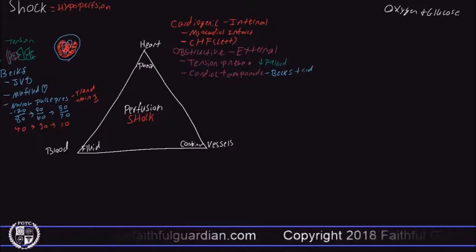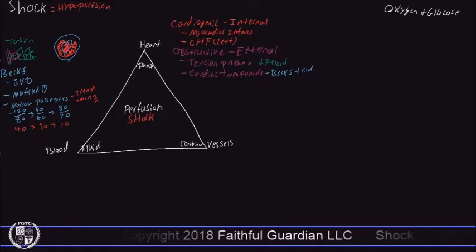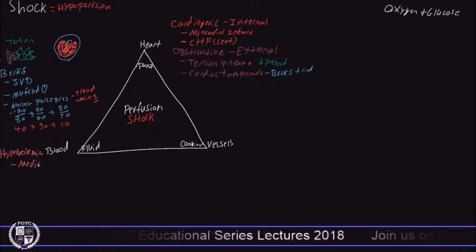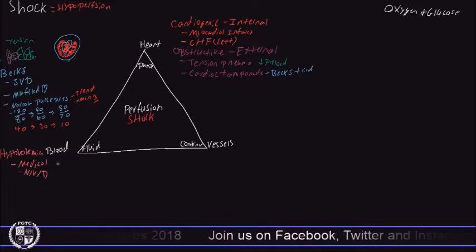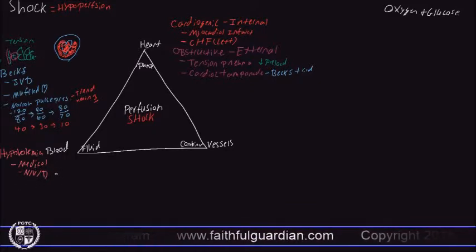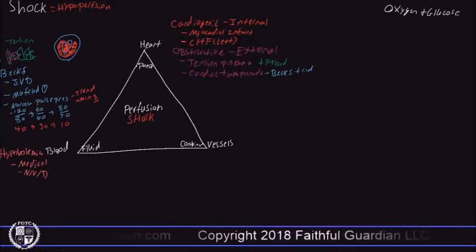The type of shock affecting the blood is hypovolemia — a low volume. You have two big causes. Medical causes include nausea, vomiting, and diarrhea — vomiting causes fluid loss, diarrhea means the body isn't retaining fluid from the large intestine, and not drinking water leads to clinical dehydration. This leads to a low volume of fluids circulating in the blood.